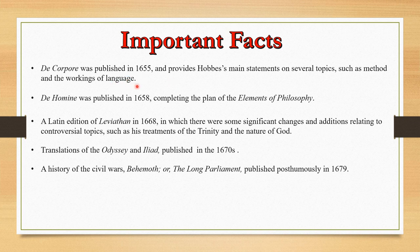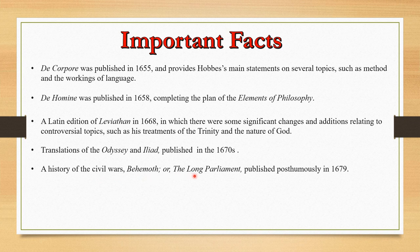De Homine was published in 1658, completing the plan of Elements of Philosophy. A Latin edition of Leviathan appeared in 1668 with significant changes relating to controversial topics such as his treatments of the Trinity and the nature of God. Translations of the Odyssey and Iliad were published in the 1670s. A History of the Civil Wars, Behemoth, or the Long Parliament, was published posthumously in 1679.